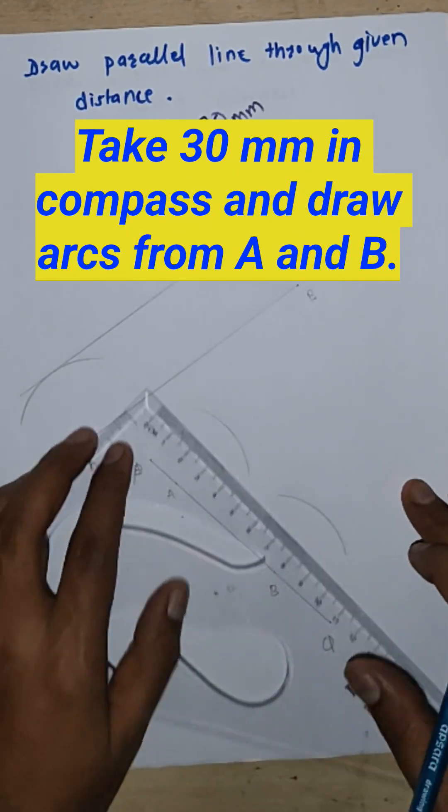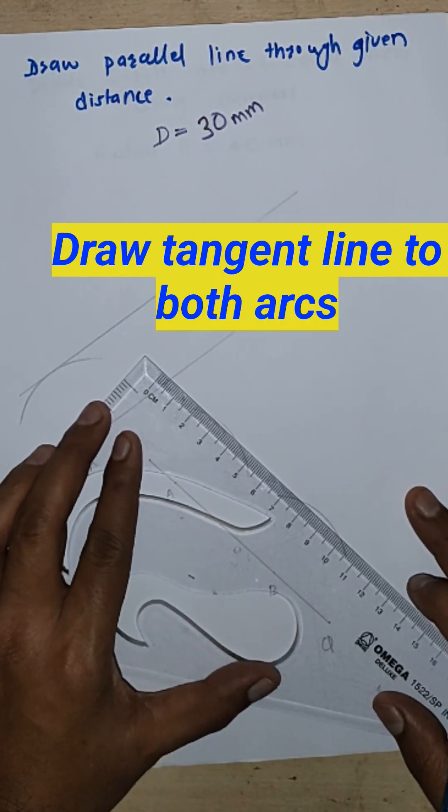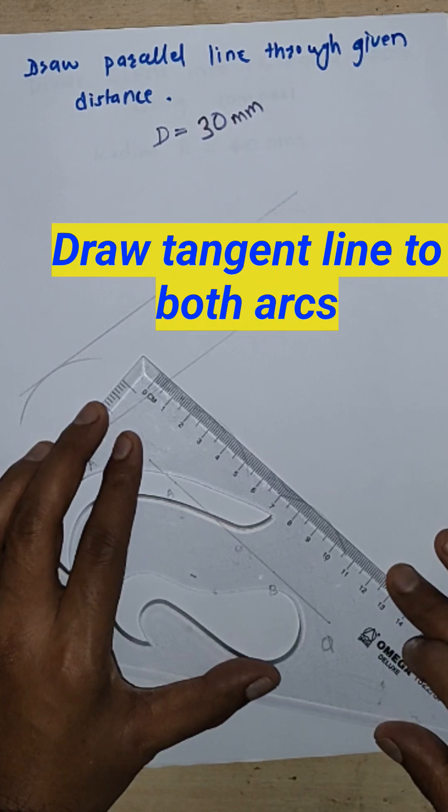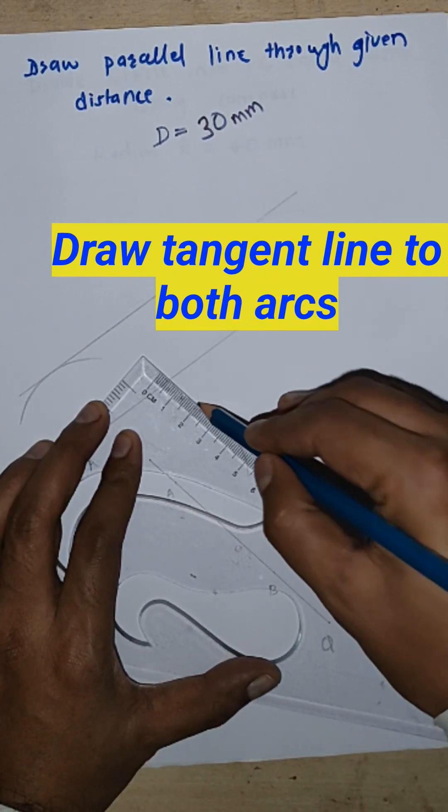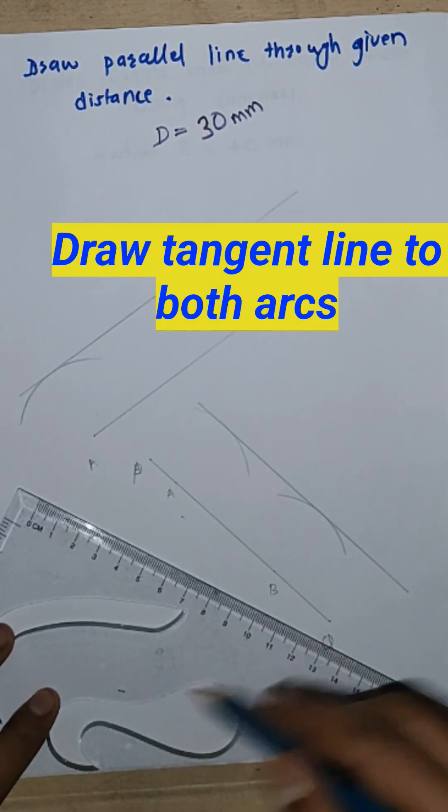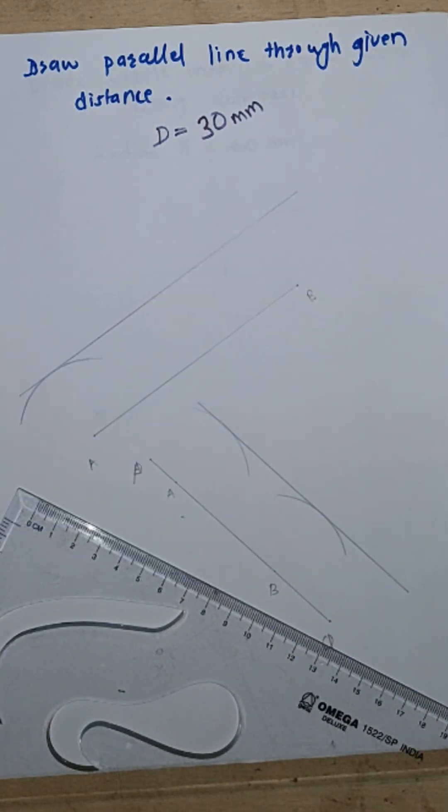Now join the two arcs by tangent. So this is the parallel line.